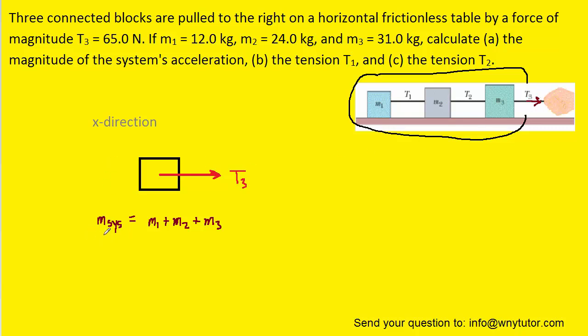Also notice that the mass of the system would simply be the sum of the individual masses, which were given to us in the question as 12, 24, and 31 kilograms. And when we add those together, we get a mass of system equal to 67 kilograms.